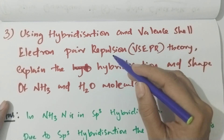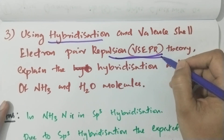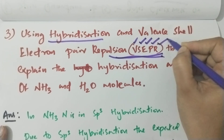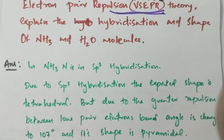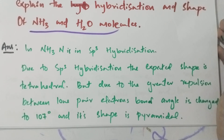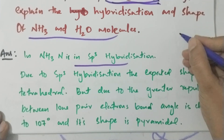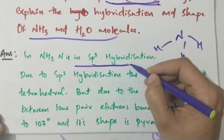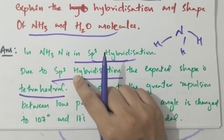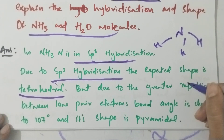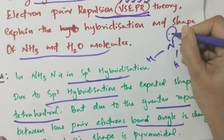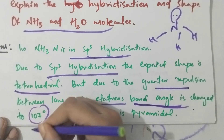Using hybridization and valence shell electron pair repulsion (VSEPR) theory, explain the shape of NH3 and H2O. In NH3, nitrogen is sp3 hybridized. The expected shape is tetrahedral, but due to greater repulsion between the lone pair and bonding electrons, the bond angle changes to 107 degrees.